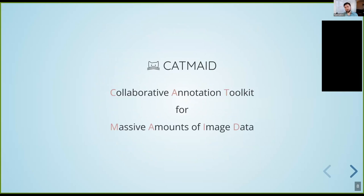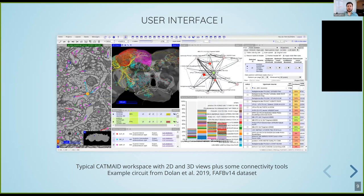The software we have been developing over the past 10 years in this research context is called CatMate, which stands for Collaborative Annotation Toolkit for Massive Amounts of Image Data. This pretty much sums up what the software does, apart from the fact that it also comes with a whole suite of analysis tools for the resulting networks, as well as user and project permission management — since given the size of the data, we want to work collaboratively in a single space.